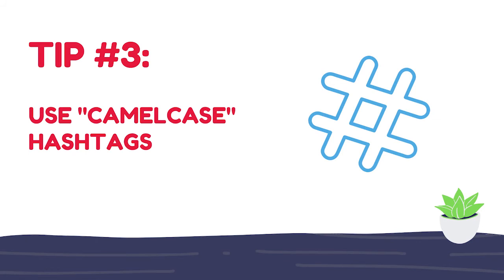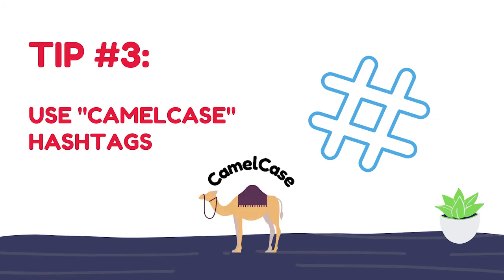Camel case is simply the technique of capitalizing the first letter of each word. It's called camel case because the rise and fall of the capital and lowercase letters kind of remind us of the humpback of a camel. You can use camel case to improve the overall readability of your hashtags.